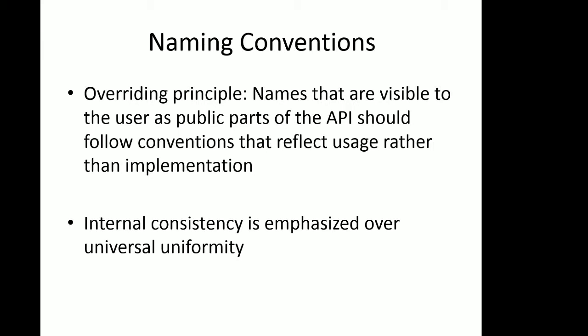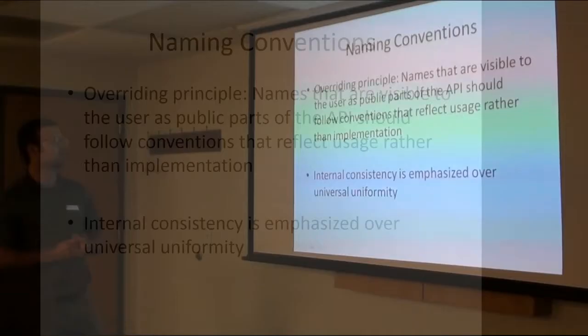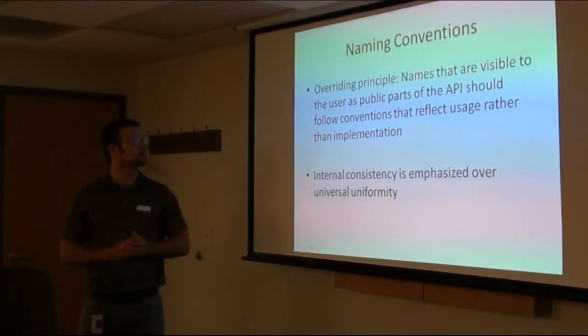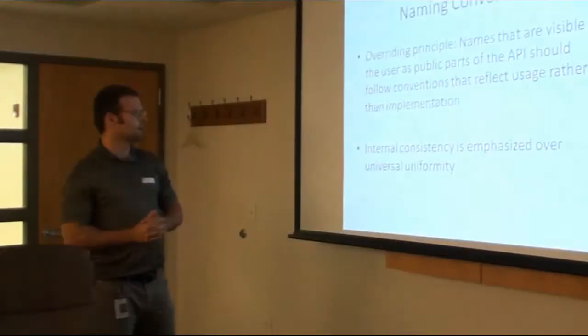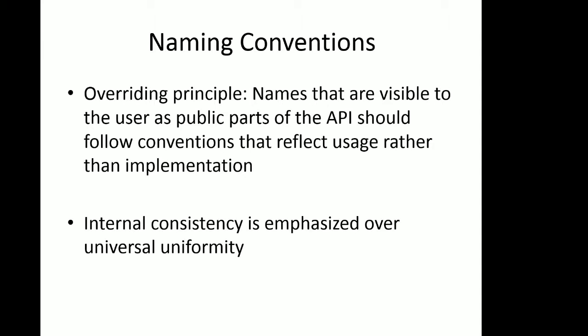Finally, naming conventions. The overriding principle: names visible to users as public parts of the API should follow conventions that reflect usage rather than implementation. For example, you might have a method that takes a boolean parameter — you would not name it 'execute_loop' based on the implementation, but rather name it according to the capability it provides, like 'process_order'. This makes your code easier to follow and read logically.